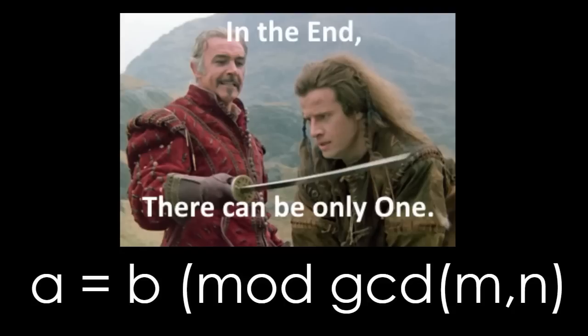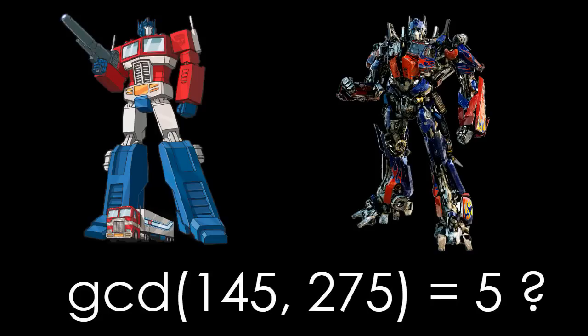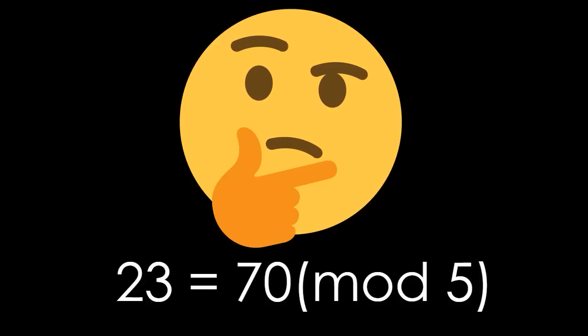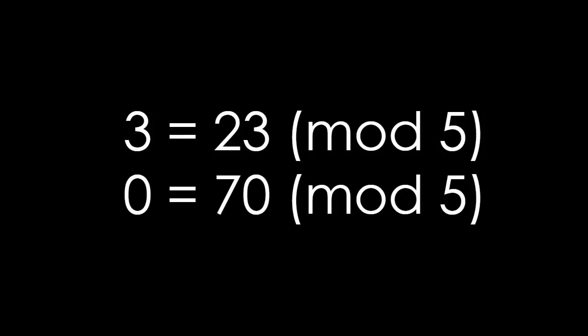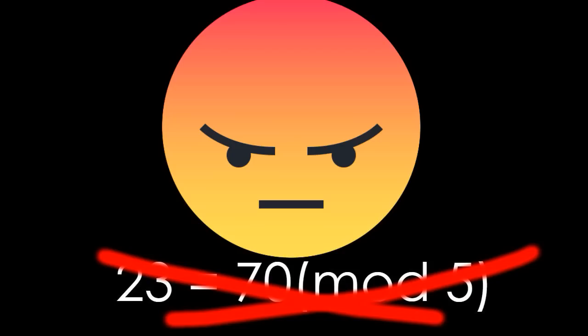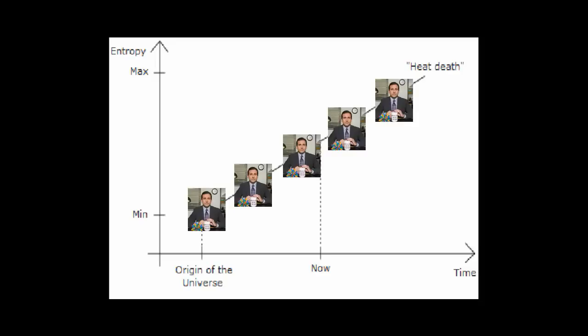In our example, we have gcd(145, 275) = 5, so we need to check if 23 ≡ 70 mod 5. But 23 mod 5 = 3, and 70 mod 5 = 0. So that means there will never be a point where these two choruses are congruent, even if we watched episodes of The Office until the inevitable heat death of the universe.